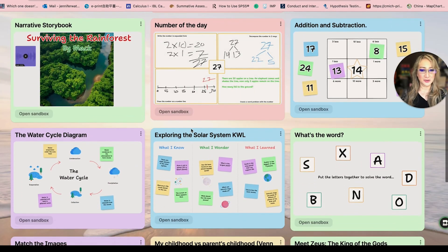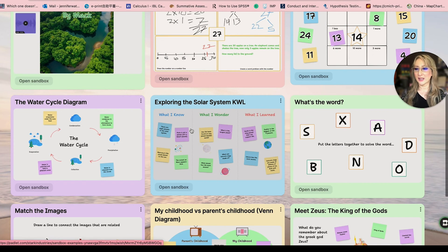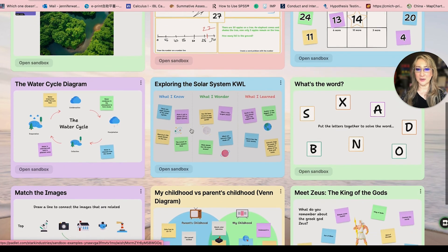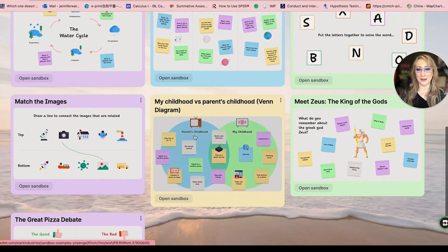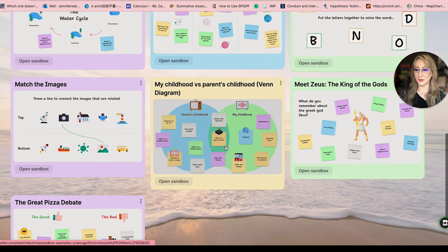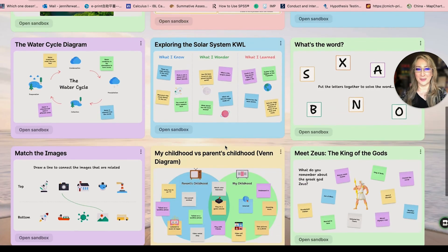So what's the word? Put the letters together. A water cycle, so mind map. I mean, just visually it looks better. Look at this Venn diagram too. A graphic organizer to see what's in common between a child's childhood and their parent's childhood, and then the great pizza debate.